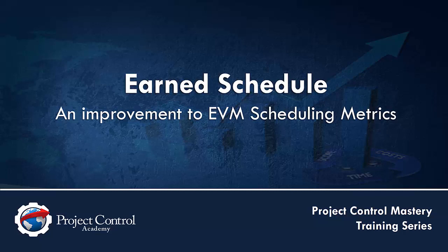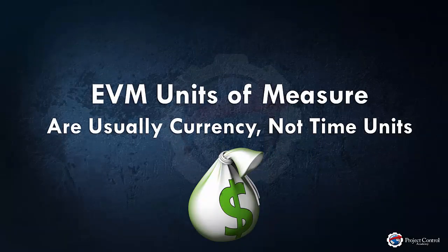Talking about earned value management: EVM is a powerful tool for evaluating the schedule and cost performance of projects and also predicting the future cost and schedule results. But existing earned value schedule performance metrics — schedule performance index (SPI) and schedule variance (SV) — do not really do a good job with schedule performance evaluation and prediction. The reason is twofold. One is that earned value metrics are measured in units of currency, typically dollars, which produces variances in dollars — useful from a budget perspective but not necessarily from a scheduling perspective.